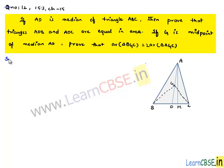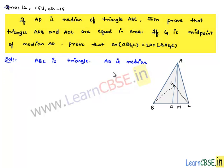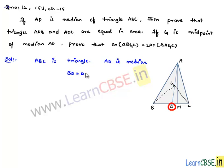In order to prove that solution, given that ABC is a triangle, AD is the median. A median is the line drawn from a vertex to the opposite side that divides the opposite side into equal halves, that is BD is equal to DC.